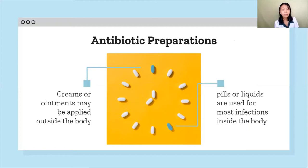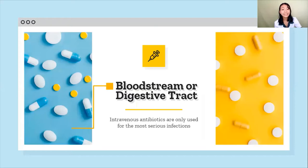How are antibiotics prepared? Antibiotic preparations come in many different forms depending on where the infection they are targeting is located. Creams or ointments may be applied to infections on the outside of the body, while pills or liquids are used for most infections inside the body — absorbed into the bloodstream or targeting bacteria in the digestive tract. Injections of antibiotics directly into the bloodstream, called intravenous antibiotics, are only used for the most serious infections.